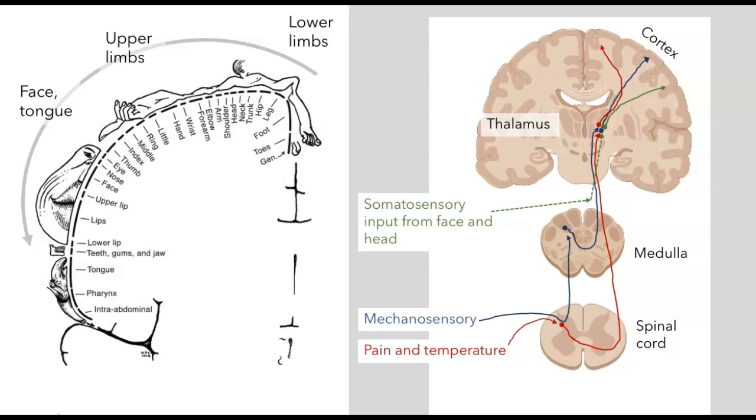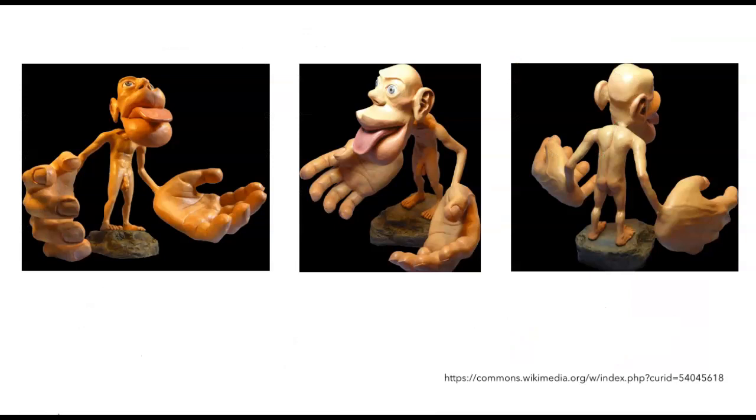This distorted map of the body feature is given the name homunculus, and I think these images here, which show us the homunculus from various angles, do a really good job of representing the amount of space in the somatosensory cortex devoted to the various parts of our body.